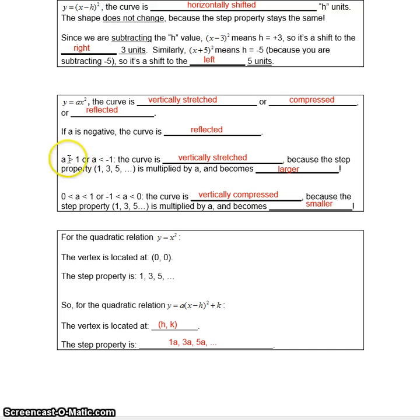Your a value is going to be a vertical stretch, compression, or reflection. So if it's bigger than 1 or less than negative 1, it's going to be a vertical stretch. If it's between negative 1 to 0 or 0 to 1, it's going to be a vertical compression. Which means this one means it's going to get fatter, this one means it's going to get thinner.